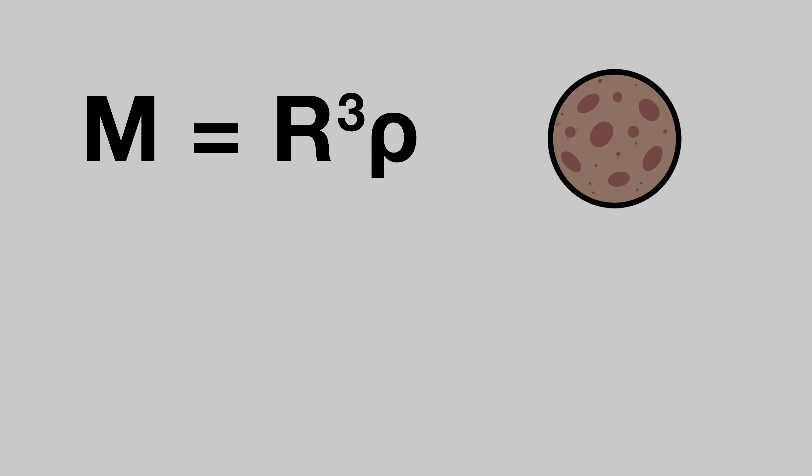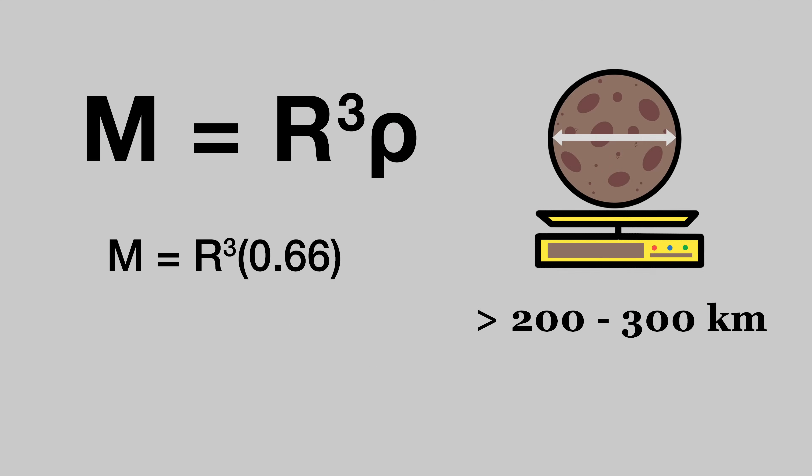Next we can use this equation to find our moon's mass and radius. M, the mass of our moon in Earth masses is equal to its radius in Earth radii cubed, multiplied by its density in Earth densities, which we already have. Because we're building a major moon we want to select a radius greater than 200 to 300 kilometers, aka 0.03 to about 0.05 Earth radii.